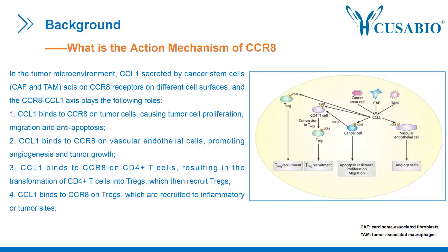What is the action mechanism of CCR8? In the tumor microenvironment, CCL1 secreted by tumor stromal cells such as CAFs and TAMs acts on CCR8 receptors on different cell surfaces, and the CCR8-CCL1 axis plays the following roles. First, CCL1 binds to CCR8 on tumor cells, causing tumor cell proliferation, migration, and anti-apoptosis.